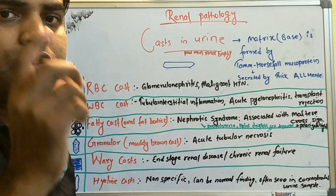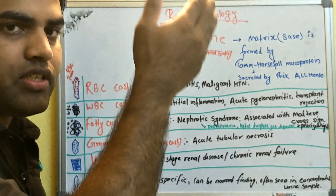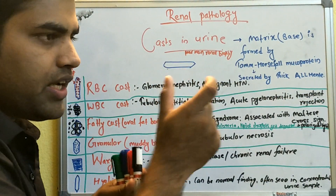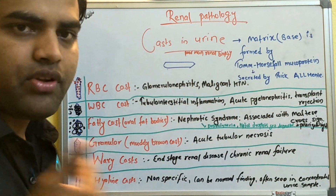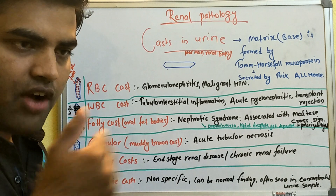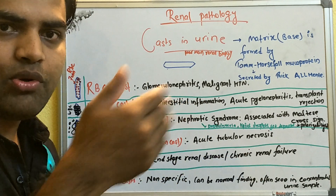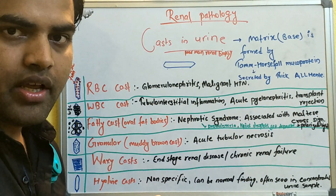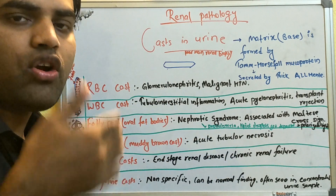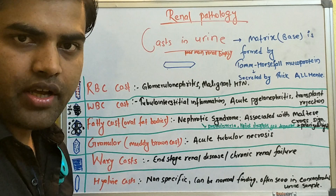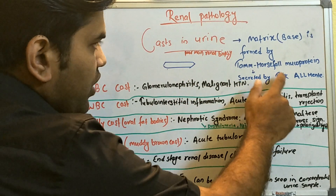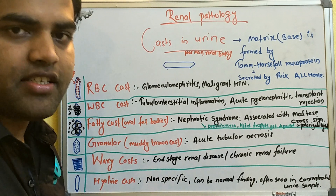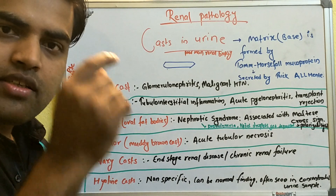To recall the renal structure: there is the descending limb, thick ascending limb of the loop of Henle, then the DCT and collecting tubules. In the thick ascending limb, a protein called Tamm-Horsfall mucoprotein is secreted. After the thick ascending limb, in the distal convoluted tubule and collecting ducts, this protein gets deposited when there is low urine flow rate and acidic pH, causing it to denature and settle down.